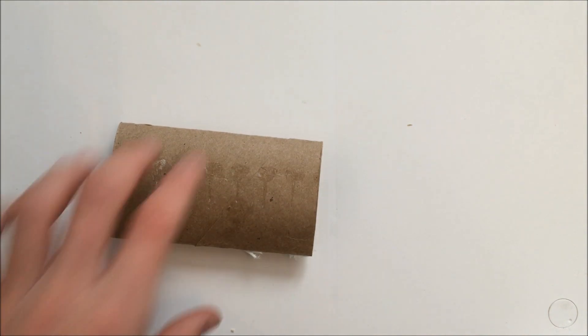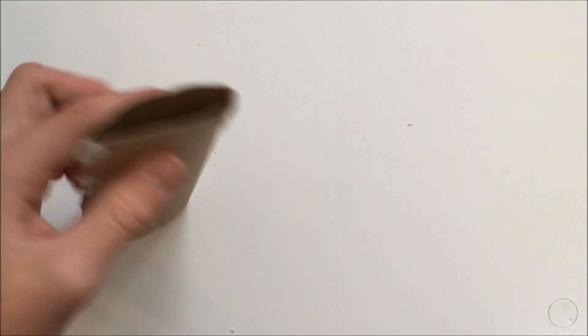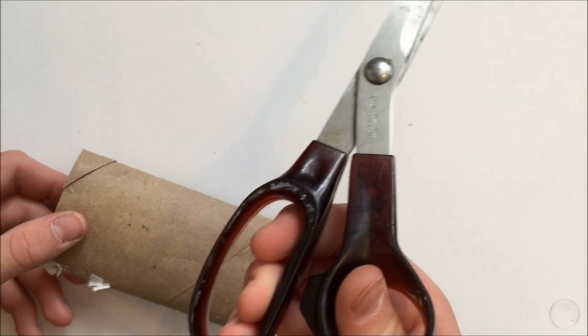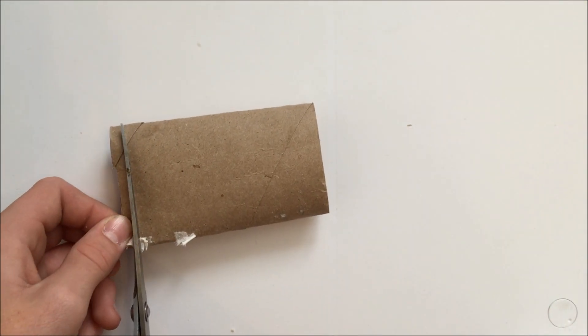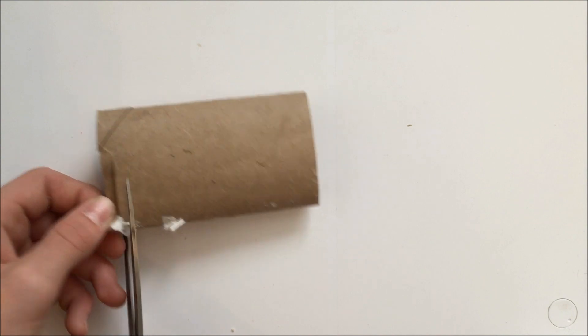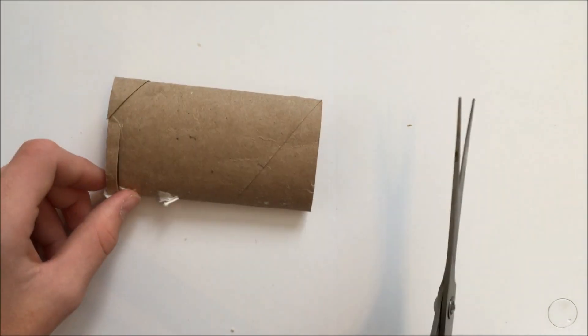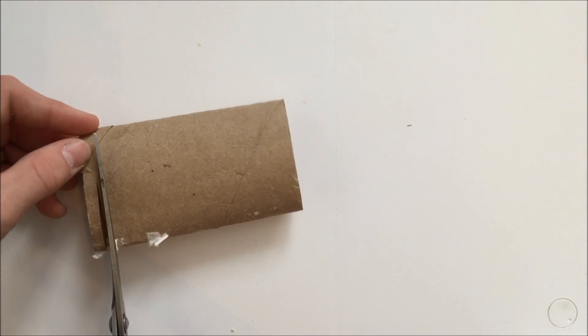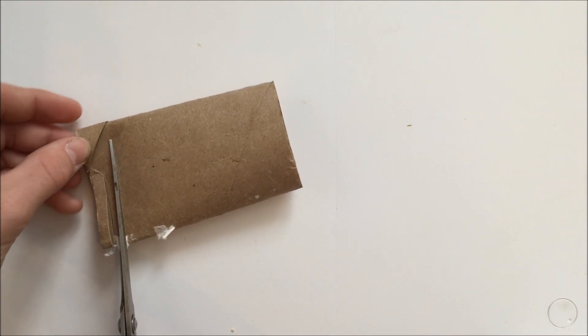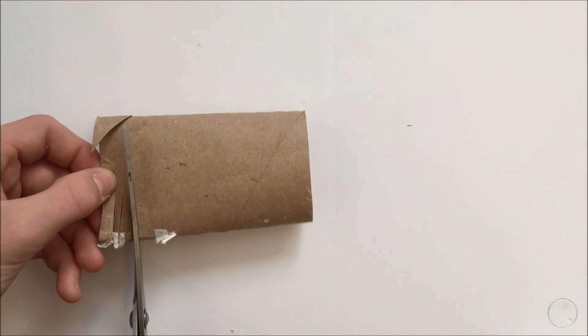As you can see it's pretty flat. Now you're going to take some scissors and you're just going to want to cut slits to about almost halfway up your toilet paper tube. And make them pretty close together. So you're just going to cut these slits.